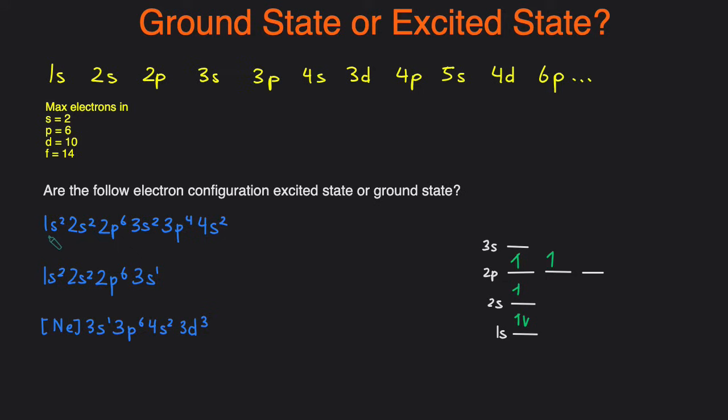Let's take a look at the first example. We'll start up 1s2 that's filled, 2s2 that's filled, 2p6 that's filled because the P's can hold 6 and then moving on to 3s, 3s2 filled, 3p4 and then 4s2. 3p4 is not filled because the 3p is filled when there's 6 electrons so since this is not completely filled before we moved on to the 4s, this makes it an excited state.